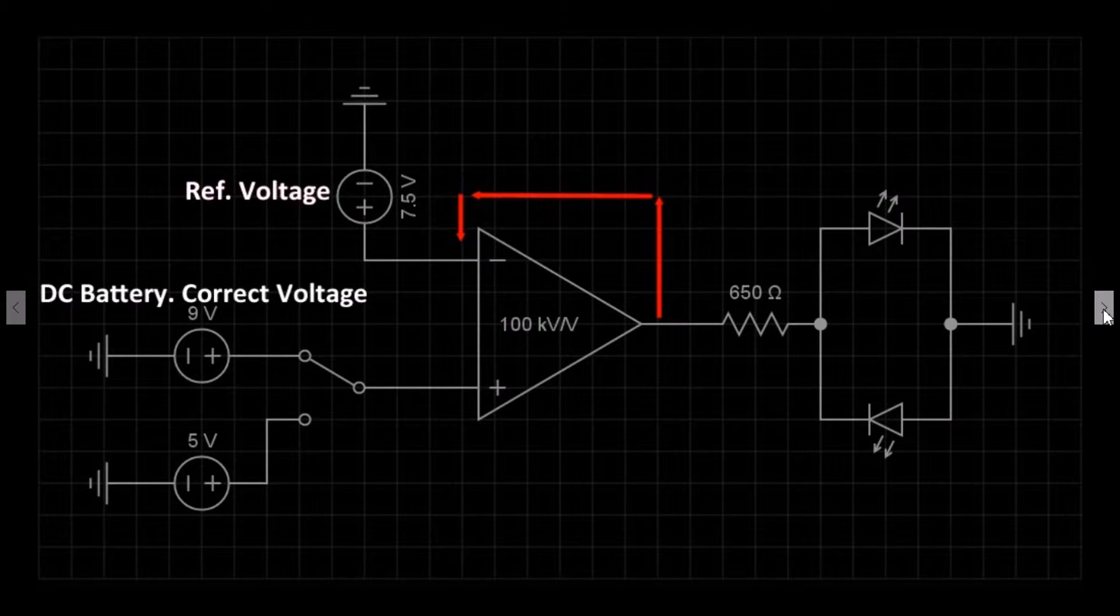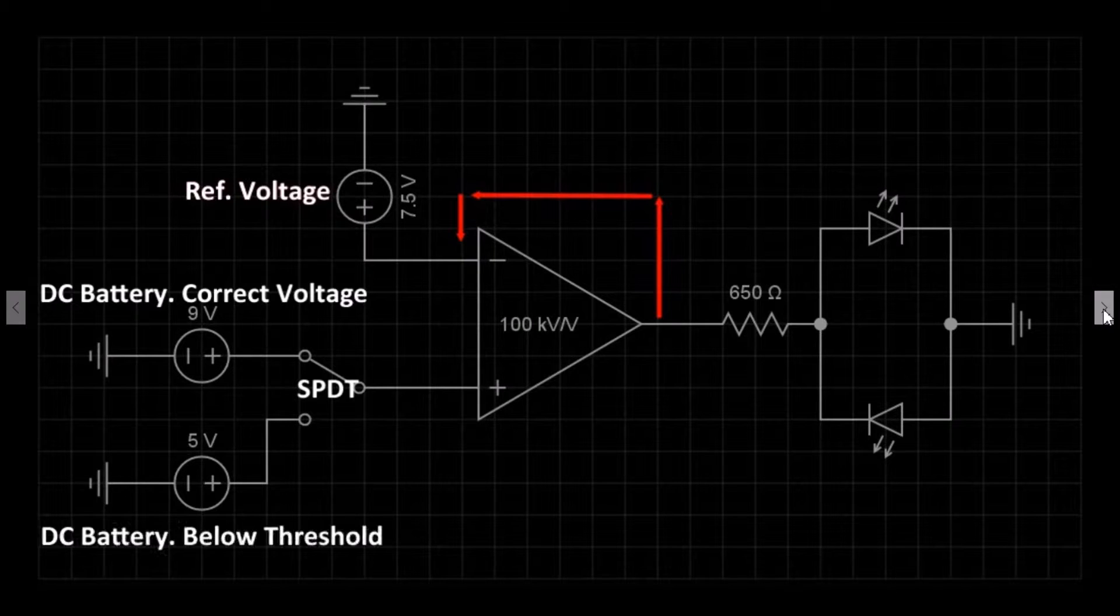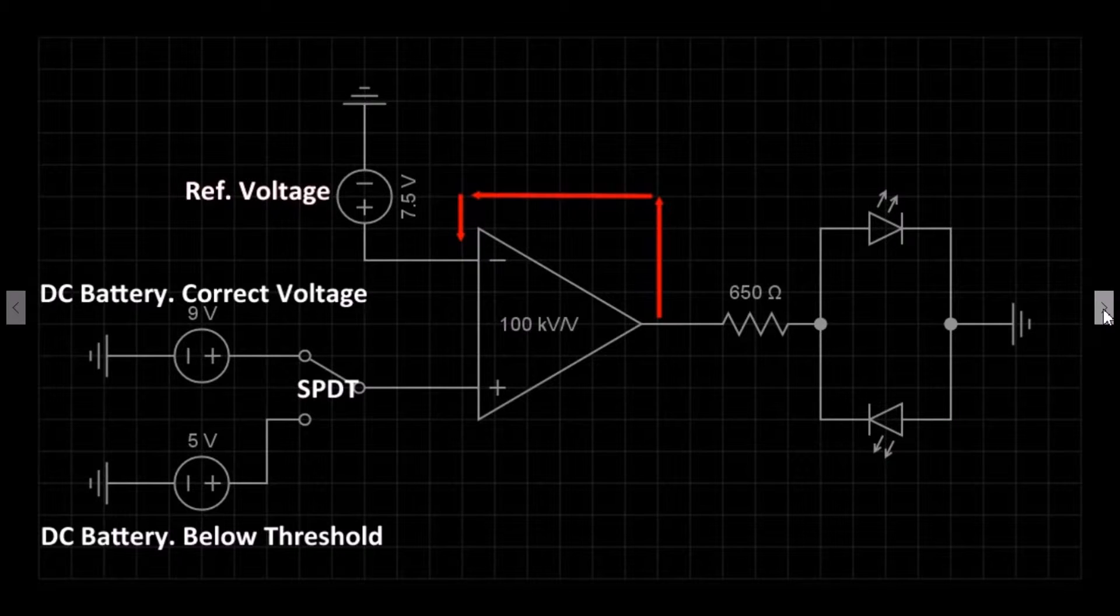There is an SPDT switch, so we can switch between 9 and 5 volts. This is to simulate the battery power dropping below the reference voltage. It is quicker and easier to simulate the circuit power loss with this setup.